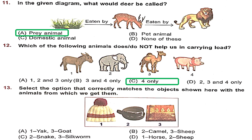Question 13: Match objects with the animals from which we get them. We have a cap, a belt, and a silk sari. Wool from sheep or yak is used to make a wool cap. Leather from camel or snake is used to make a belt. Silk from silkworm is used to make silk sarees. Option A: yak and goat — we don't get silk from goat, incorrect. Option B: camel and sheep — sheep doesn't give silk, incorrect. Option C: snake (leather) and silkworm (silk) — both correct. Option C is the right answer.